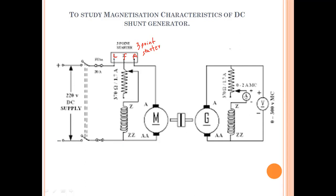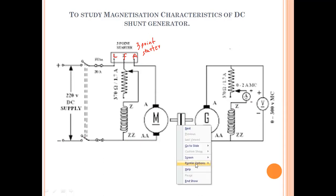The third point of the starter, A, is the armature terminal, which is connected to the positive armature of the motor. The negative armature of the motor is connected to the negative of the supply. The motor shaft is then coupled with the generator shaft.